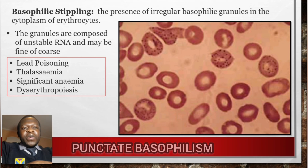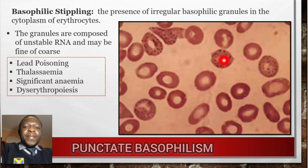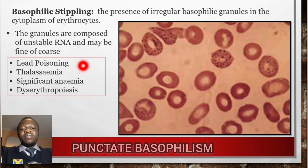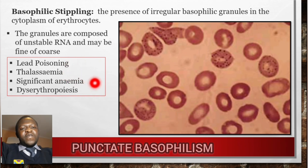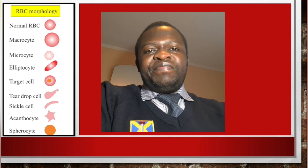Basophilic stippling is the presence of irregular basophilic granules in the cytoplasm of erythrocytes. The granules are composed of unstable RNA and may be fine or coarse. This finding is most importantly associated with lead poisoning, but can also be found in thalassemia, significant anemia, and dyserythropoiesis.